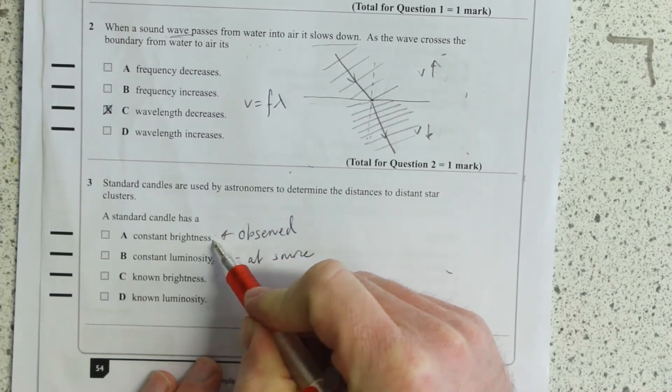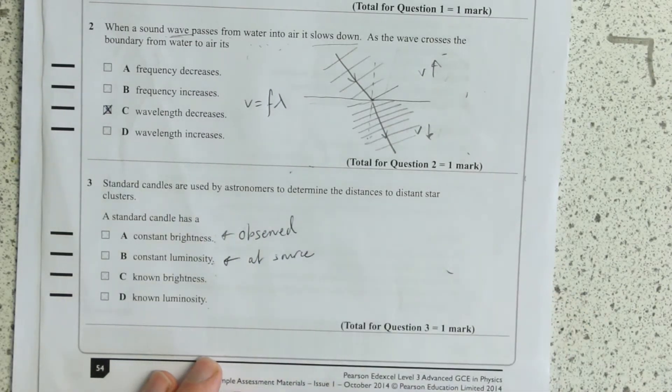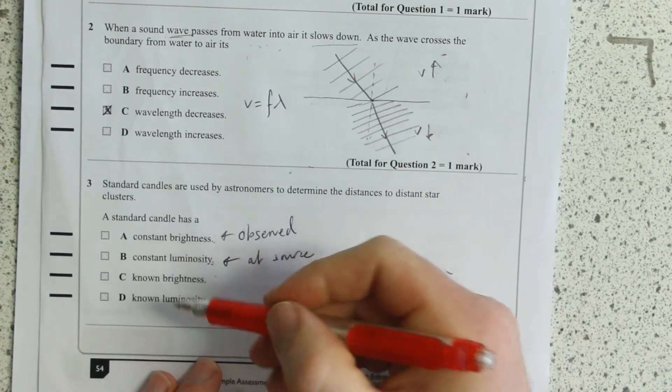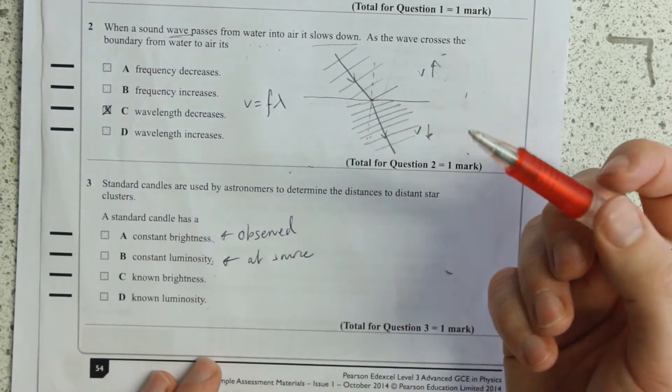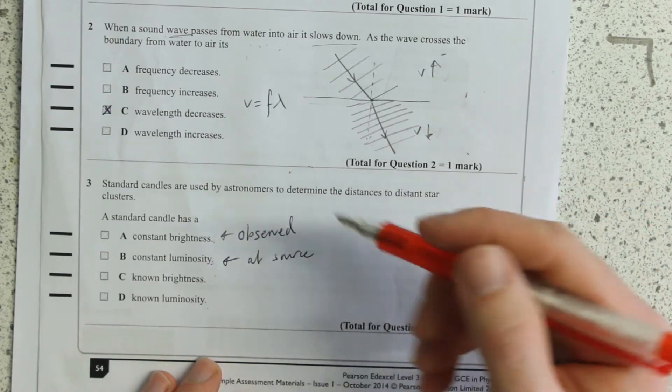This is the power per square meter as observed, and then is it going to be constant or known?